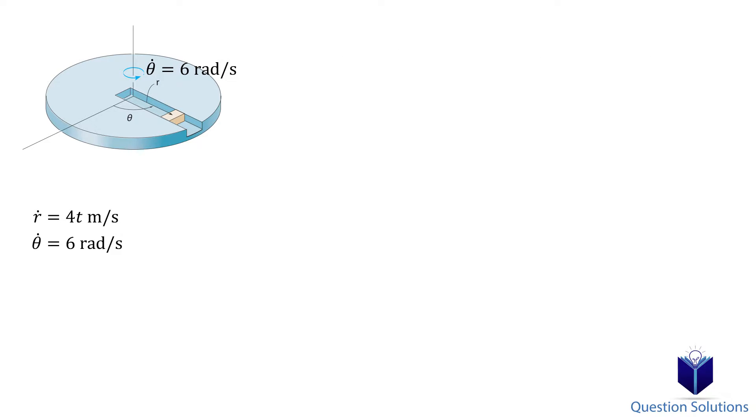We need a position equation. We are given the speed, which is a derivative of the position equation. That means we need to take the integral to go backwards.